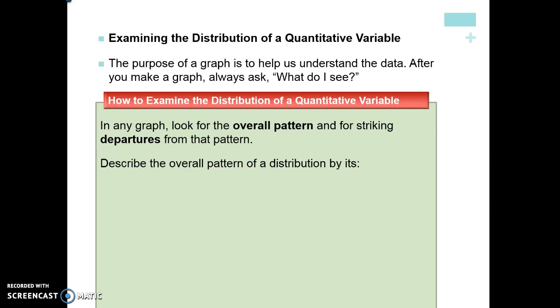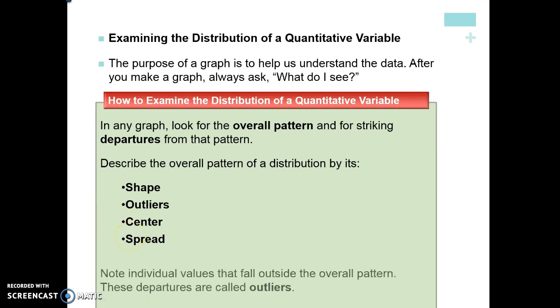When we describe the overall pattern of a distribution we're going to use something called SOX. It's easy to remember. We want to look at the shape of the graph, are there any outliers, anything that's really far away, what is the center of the distribution, so the mean or median, and the spread - how far apart is the data spread?